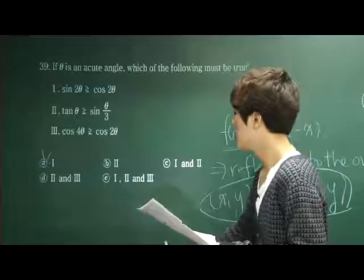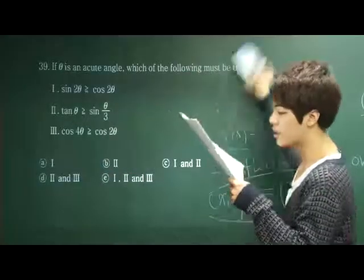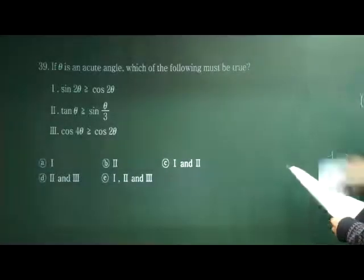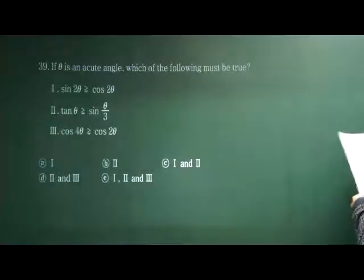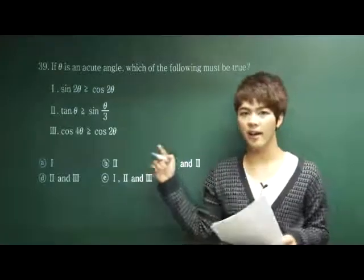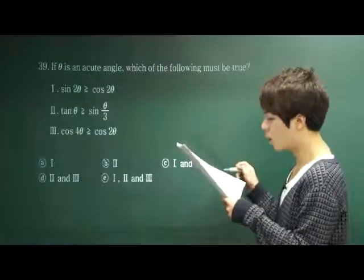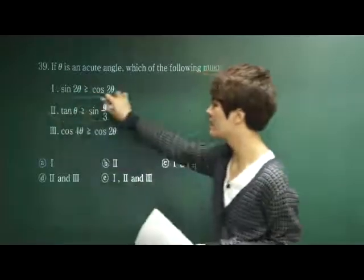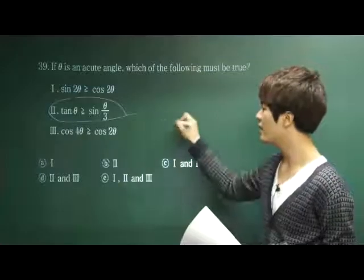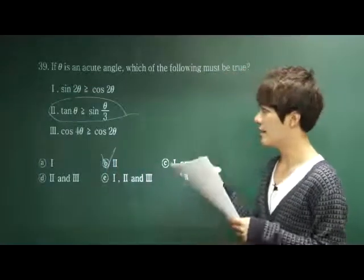Let's move on to number 39. If theta is an acute angle, which of the following must be true? We are given three statements. The easiest way to solve this kind of problem is to put it in your calculator and graph it out. If you graph this out, you will see that only the second statement is true — there is no way to find this out by hand. The correct answer is B.